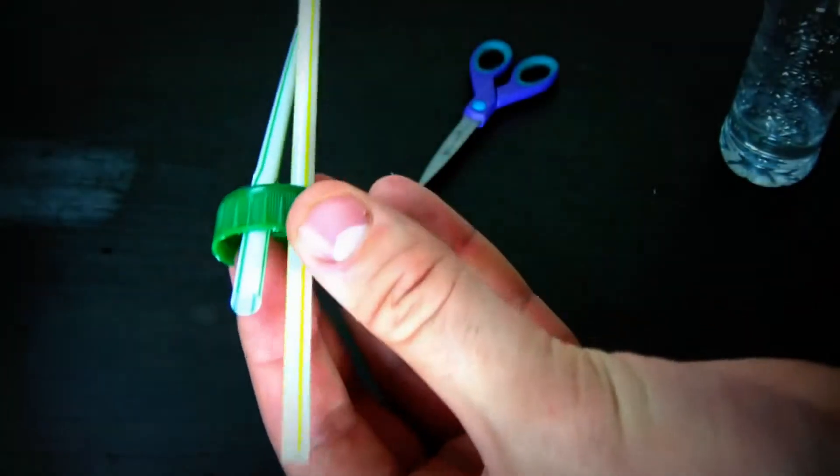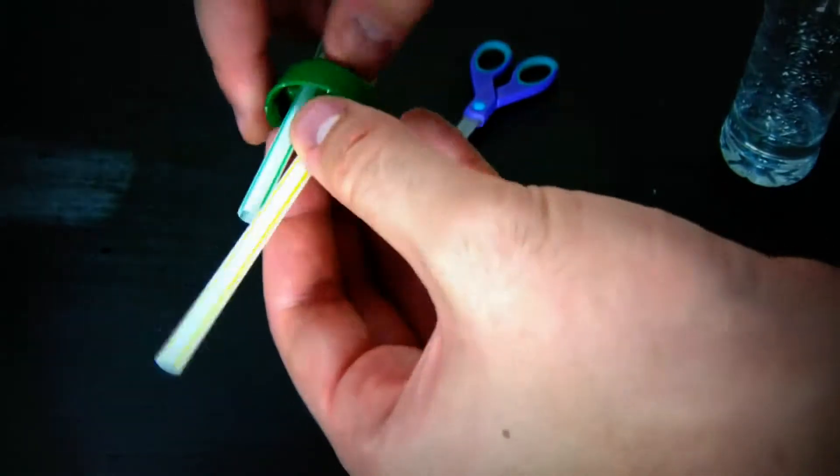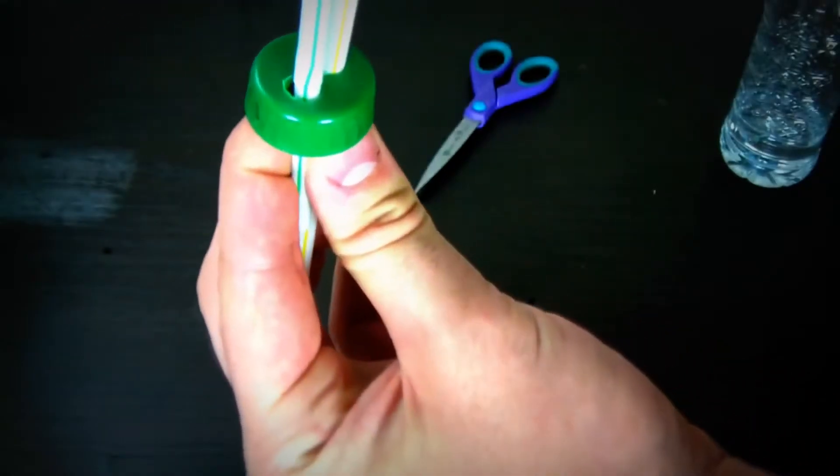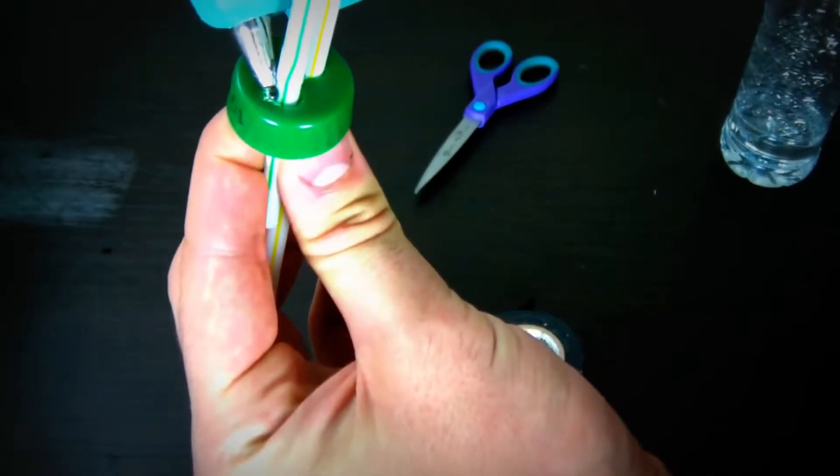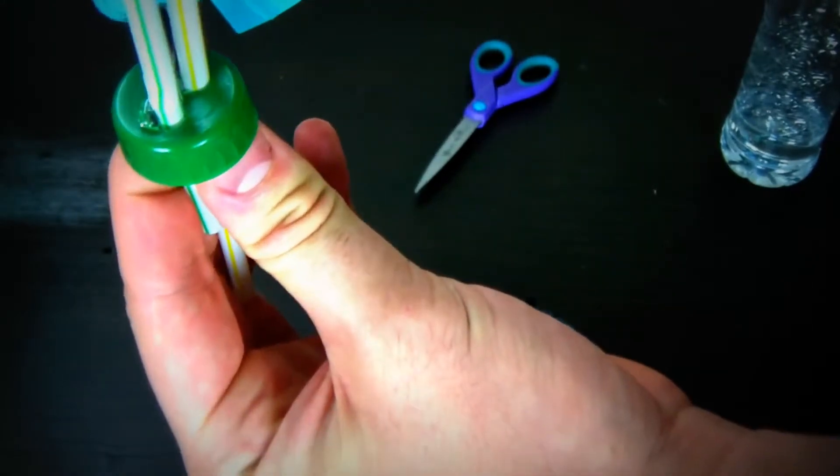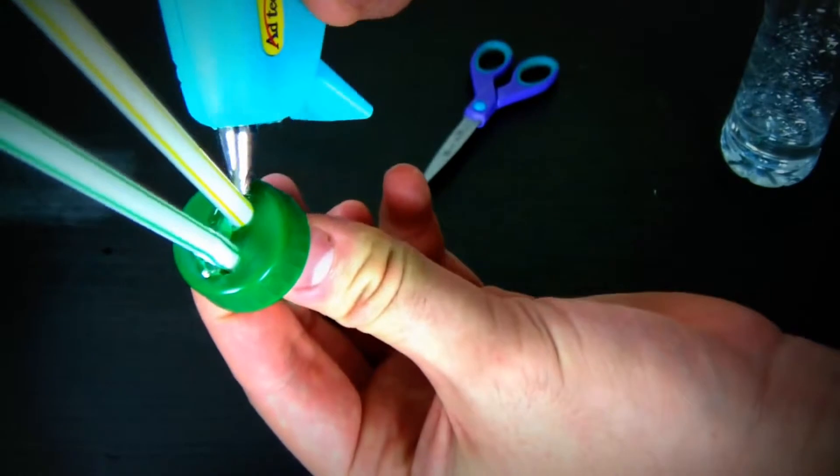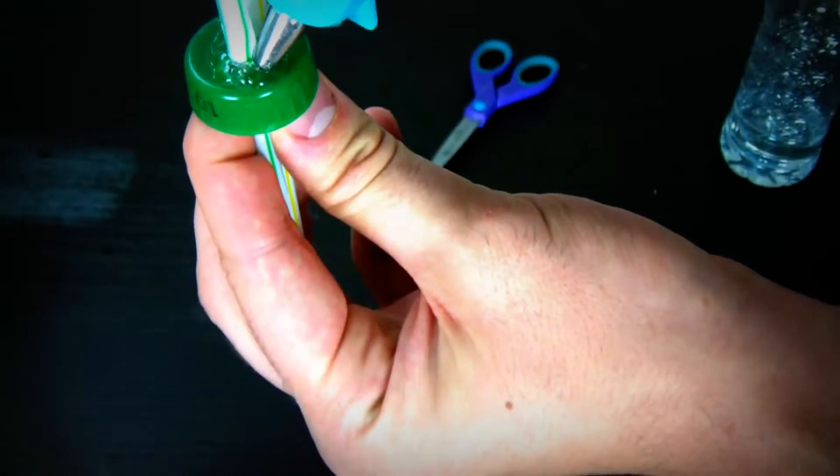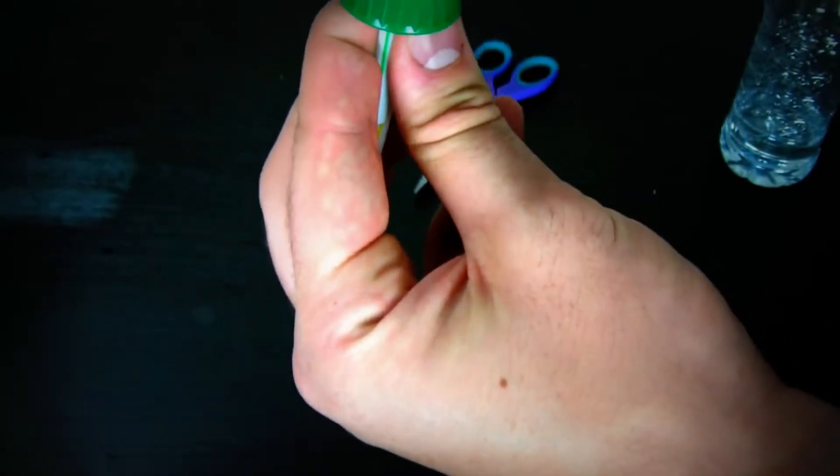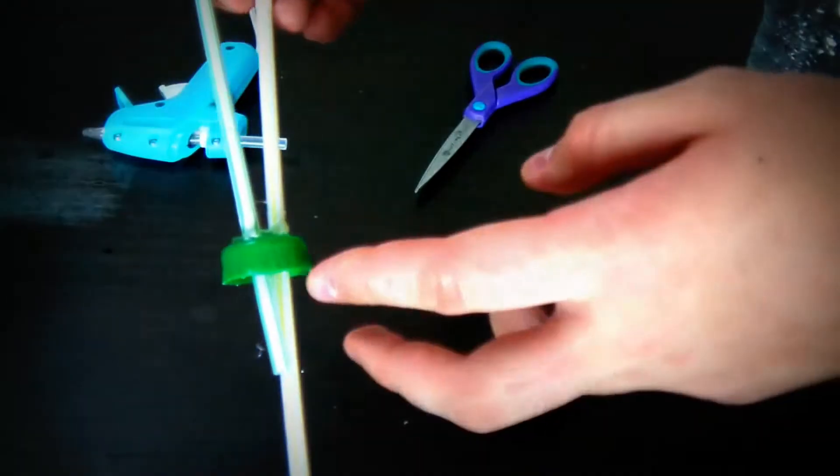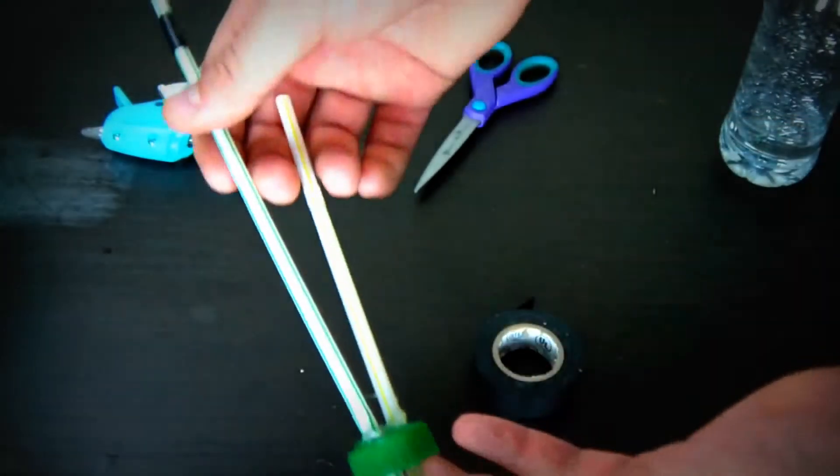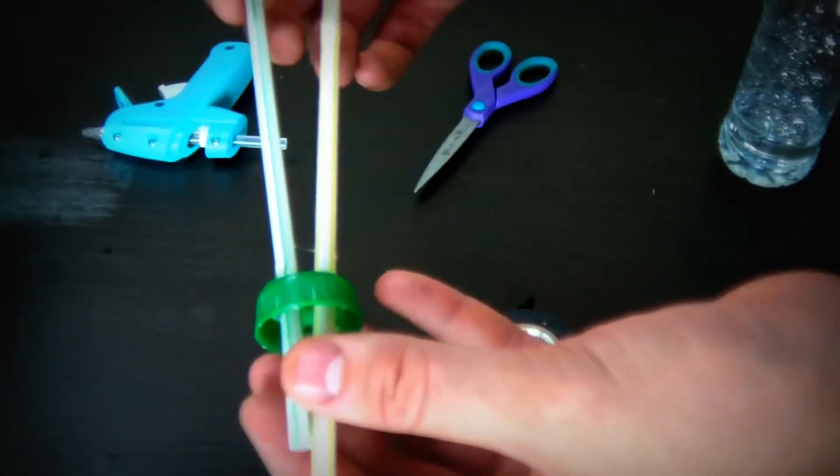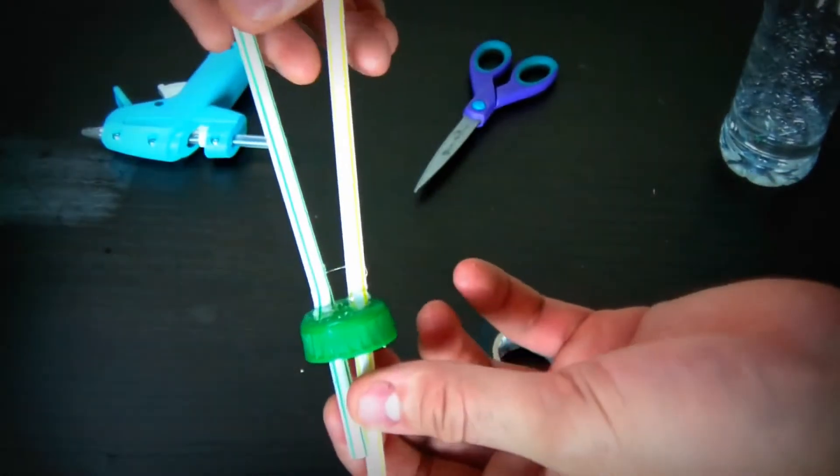Then what we're gonna do is put two straws like that. One should be a lot longer than the other one. Then we're gonna get our hot glue gun and seal it up with hot glue. Nice layer so the water will not go off anywhere. The yellow one is longer than the green one, and the green one is longer on that side. We gotta wait like a couple of minutes till the glue will dry.